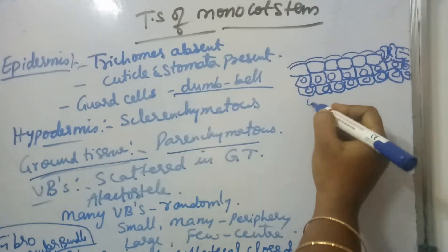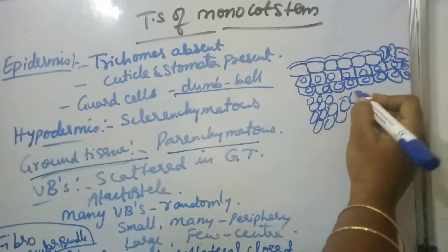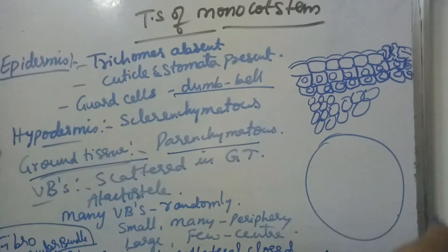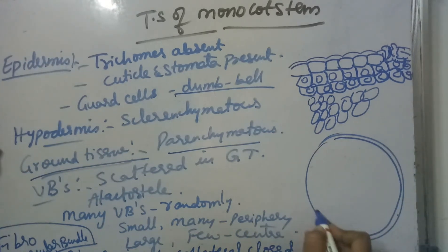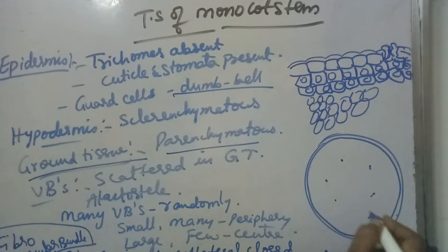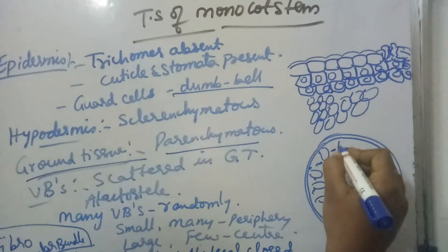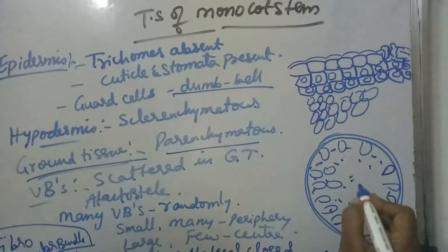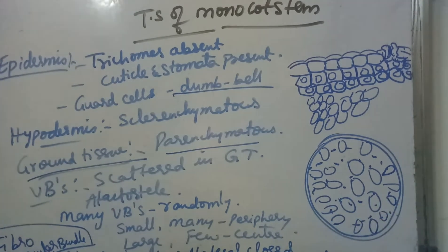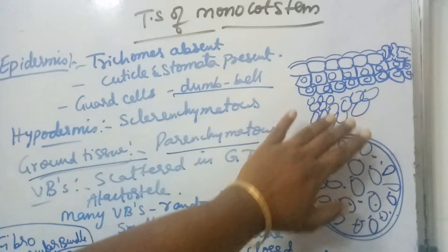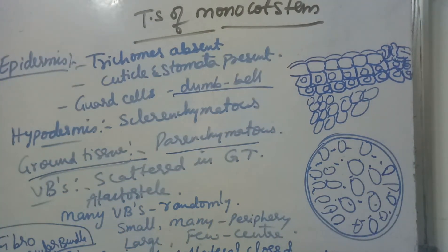In monocot stem, only ground tissue is present — there is no separate general cortex or endodermis. The vascular bundles are scattered irregularly in the ground tissue. Peripherally, many small vascular bundles are present in 2–3 rings, while towards the center, fewer but larger vascular bundles are present.